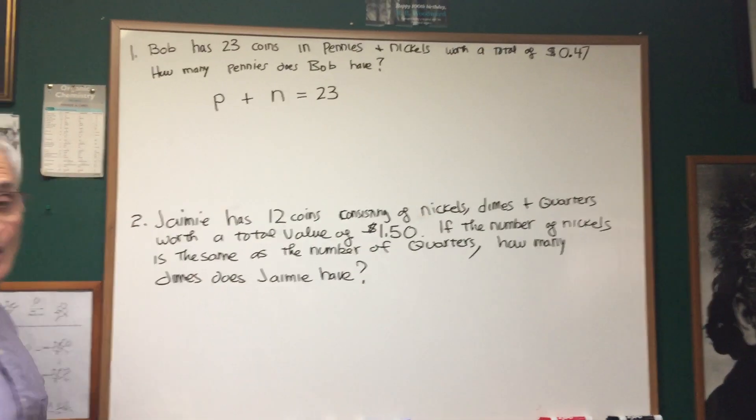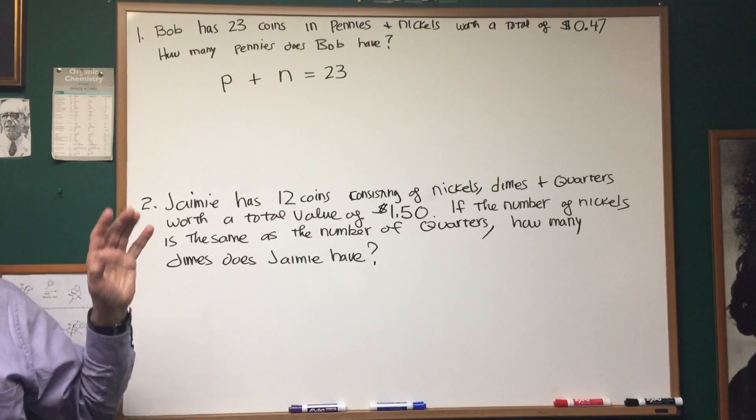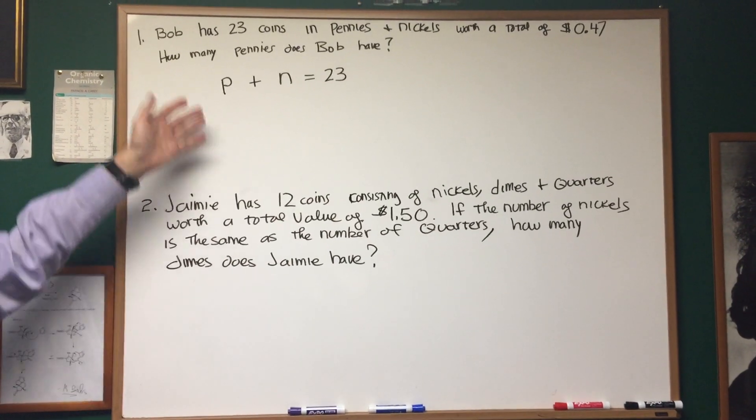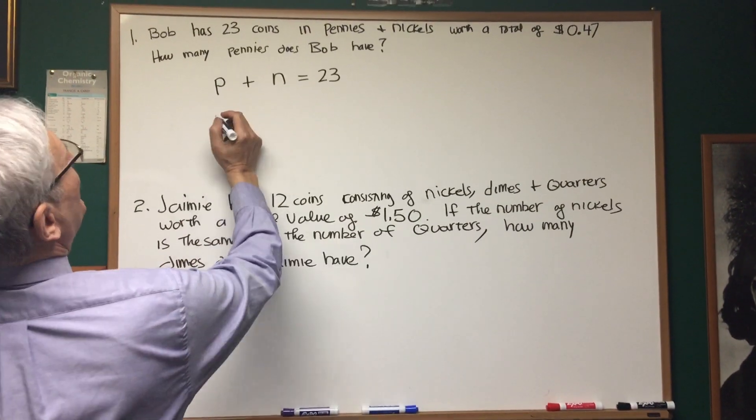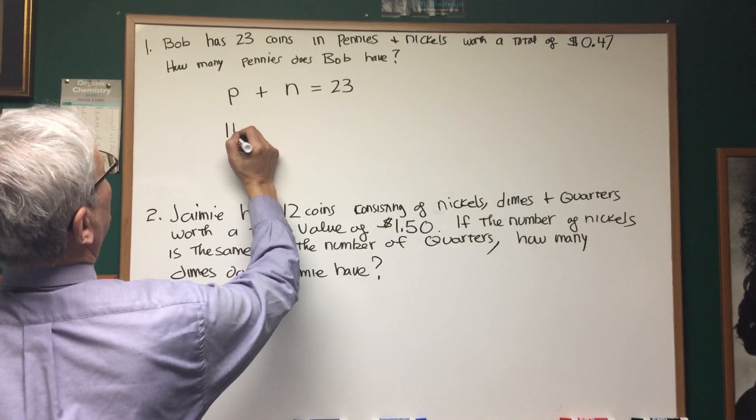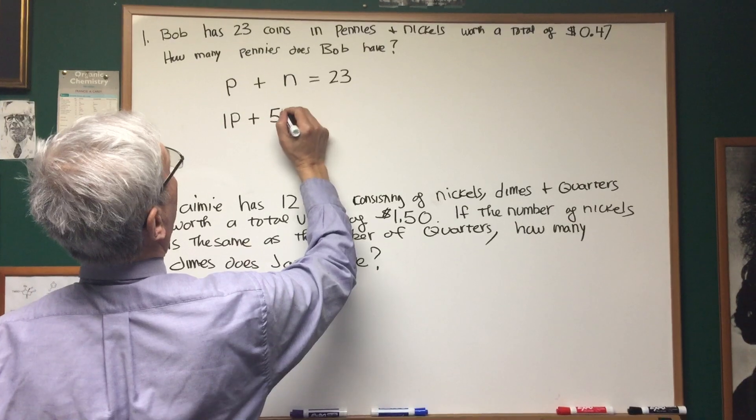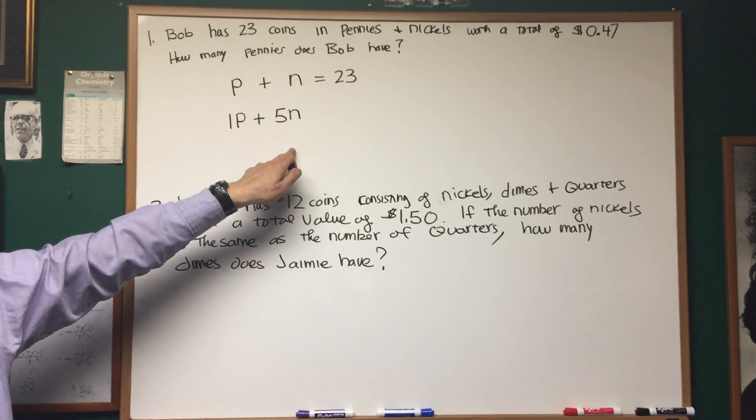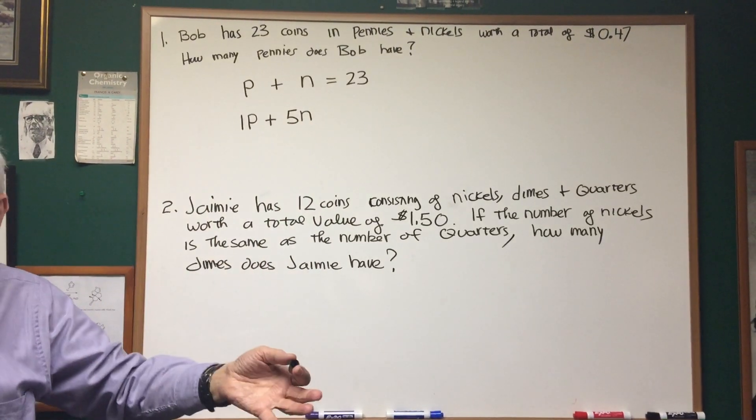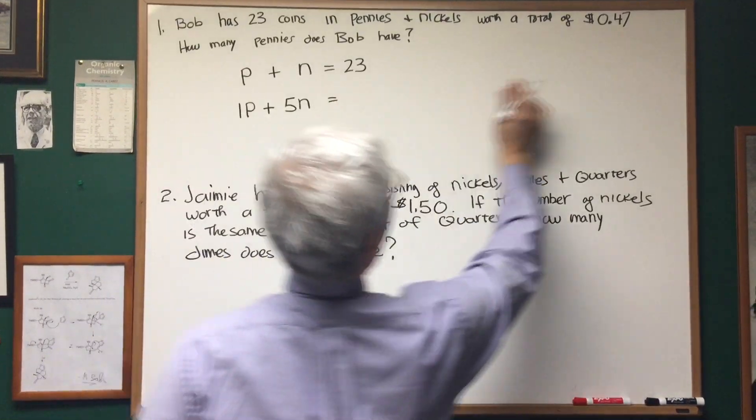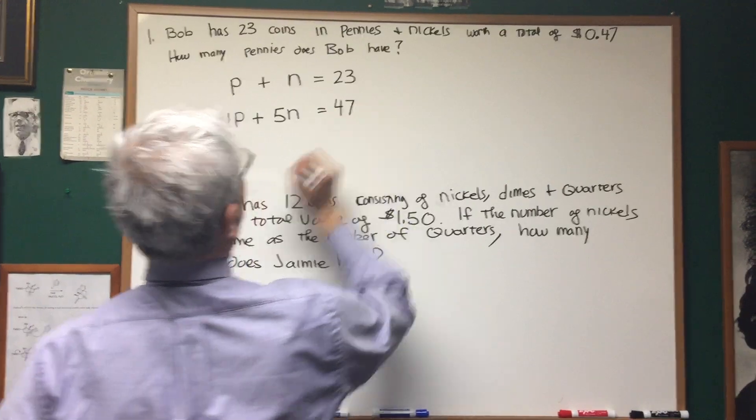We know that the number of pennies plus the number of nickels is 23. Now, we have two variables, and in mathematics that means we need two independent equations to solve that. So now let's get another equation equating the value of the money that we have. We have pennies, which are worth one cent each. So I'll multiply P by one, which is really not necessary. And then I'll multiply N by five, because that would be the value of those N nickels. P plus 5N is equal to 47.